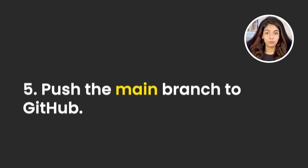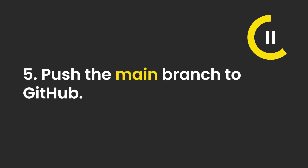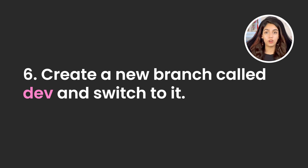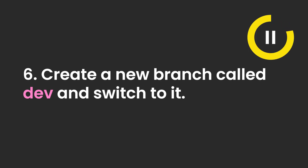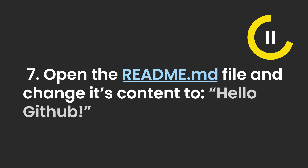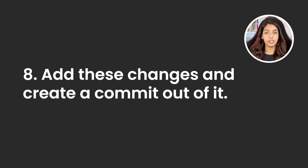Now push your main branch to GitHub. Now go back to your terminal and create a new branch called dev and switch to it. Open the readme file — you'll be able to see hello world written inside of it. Replace hello world with hello GitHub. Again, add this change and create a new commit out of it with a suitable commit message.